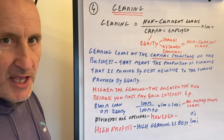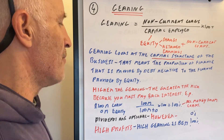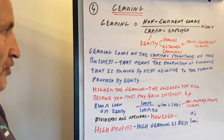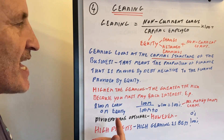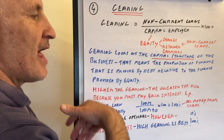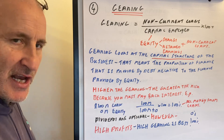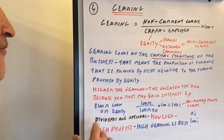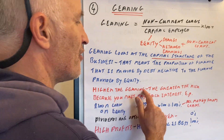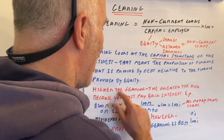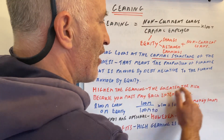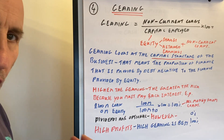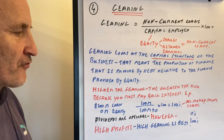So gearing looks at the capital structure of the firm — when you set up, where do you get your money from? Do you get your money from shares? Whatever the ratio is, it will tell us a story about the firm. For example, the higher the gearing, the greater the risk for the firm.